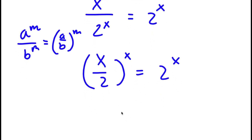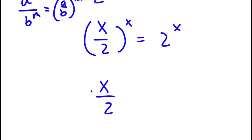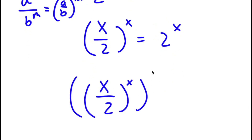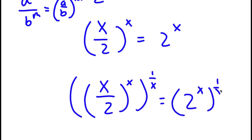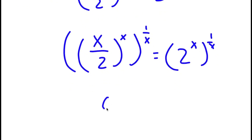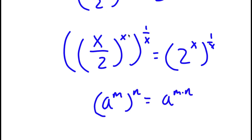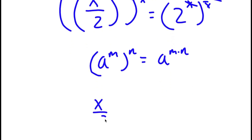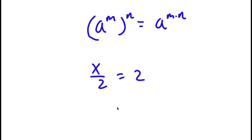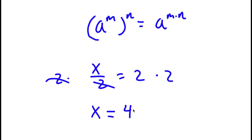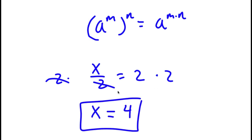Now I'm going to take the power of 1 over x on both sides. So now I have x over 2 to the power of x to the power of 1 over x, equal to 2 to the power of x to the power of 1 over x. If I have a to the power of m to the power of n, this is equal to a to the power of m times n. So x times 1 over x cancel out, and again these two cancel out, so I'm simply left with x over 2 equals 2. To solve this, I multiply both sides by 2, and I get x equals 4. So x equals 4 is my answer.